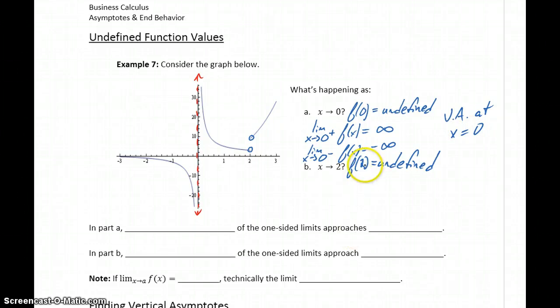At f of 2, where our function is also undefined, if we take the limit as x approaches 2 from the right, we're going to get a function value of 10. And if we take the limit as x approaches 2 from the left, we'll get a function value of probably right around 4 or so. And we have no vertical asymptote.